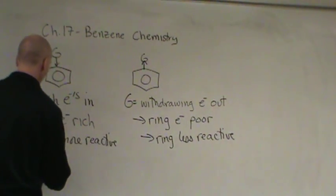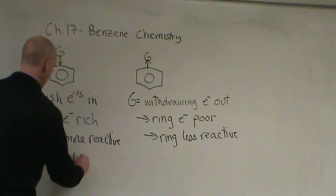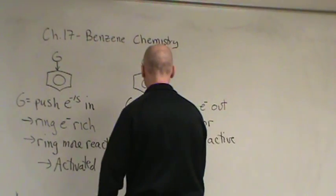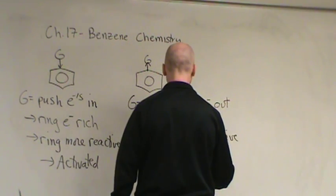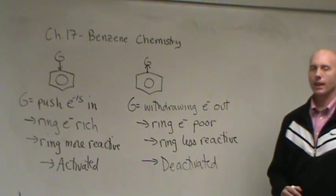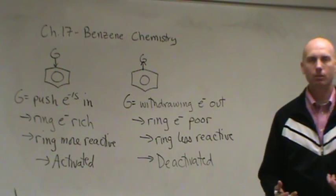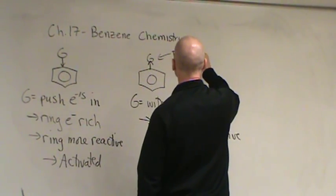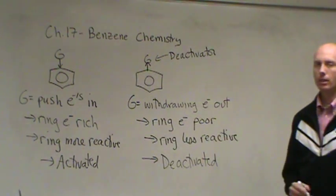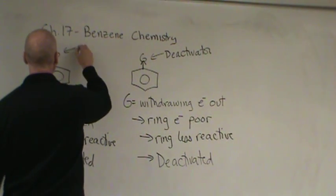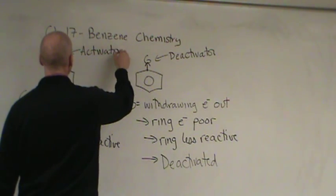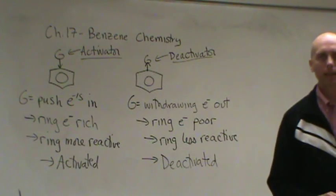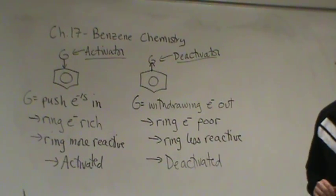Over here, with the electron-pushing group, we say that the ring has become activated. Over here, with the electron-withdrawing group, we say the ring has become deactivated. All benzene rings with a group on them will either be activated or deactivated. So this G we call a deactivator, and this G we call an activator.